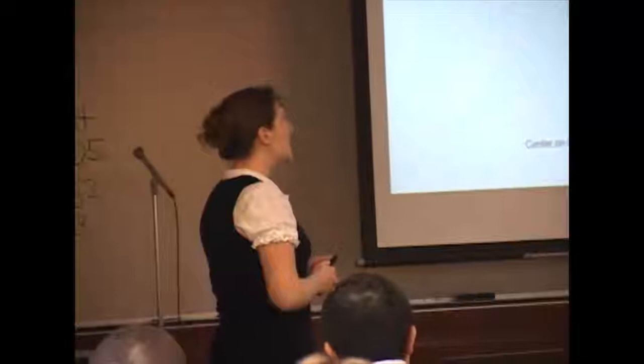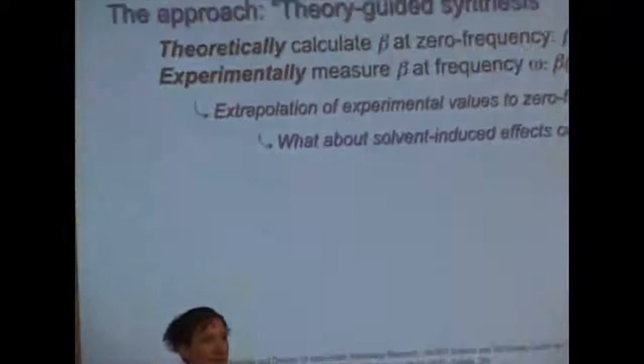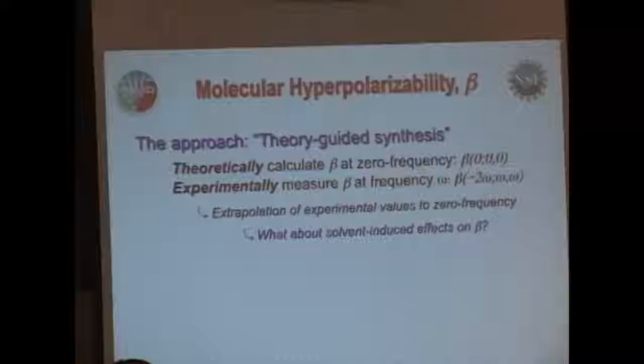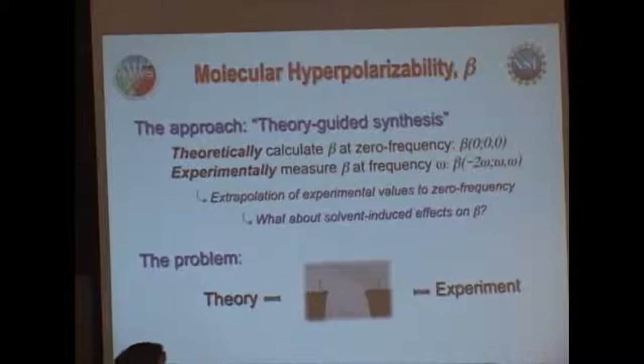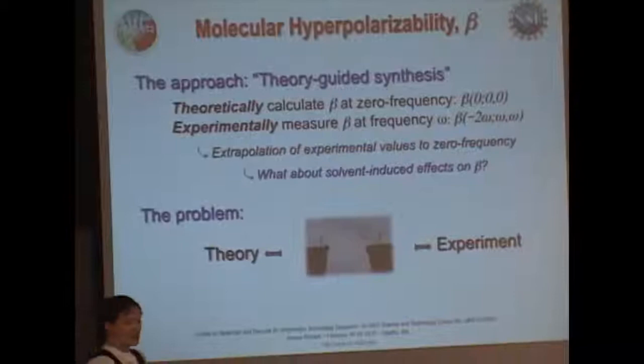So you calculate these at zero frequency, measure them at a specific frequency, extrapolate your experimental values back to zero frequency. You can see how a lot of issues can possibly come up from this. So there's a gap that exists between your theoretically predicted values and those that are actually experimentally measured.